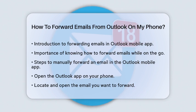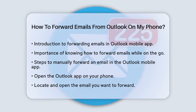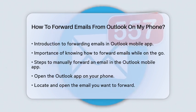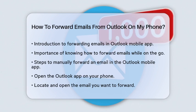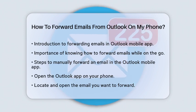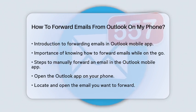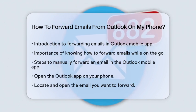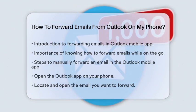To manually forward an email in the Outlook mobile application, start by opening the app on your phone. Once you are in the app, find the email you wish to forward. Tap on that email to open it. You will see a reply arrow icon, usually located at the top or bottom of the screen. Tap that reply arrow.